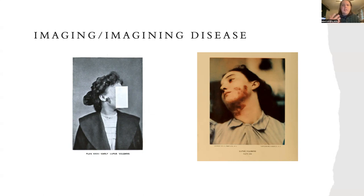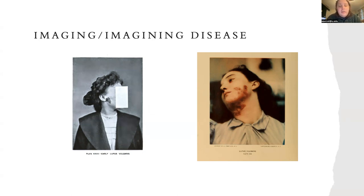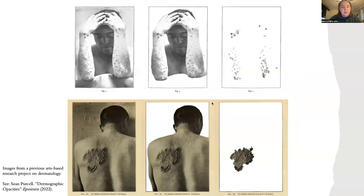To do this I want to quickly examine a pair of images which depict lupus vulgaris — a skin disease that is a manifestation of tuberculosis that happens on the skin. These images are examples of clinical photography; they represent the disease and its symptoms for the purpose of diagnosis. But there is a problem: the disease cannot be visually separated from the subject's body.